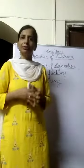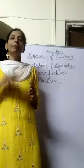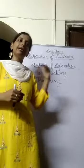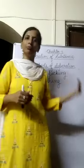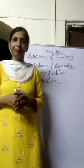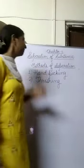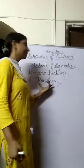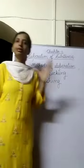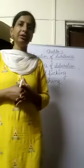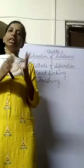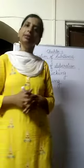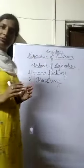Grains are removed from the stalk with the help of bullocks. But nowadays, the machine we use to separate grain from the stalk is called a thresher. With the help of a thresher, grains are separated from the stalk, and the method is called threshing. Separation of grains from the stalk is called threshing.